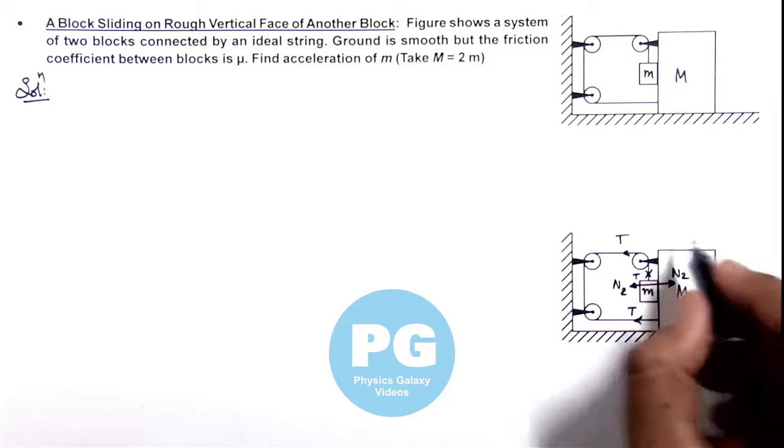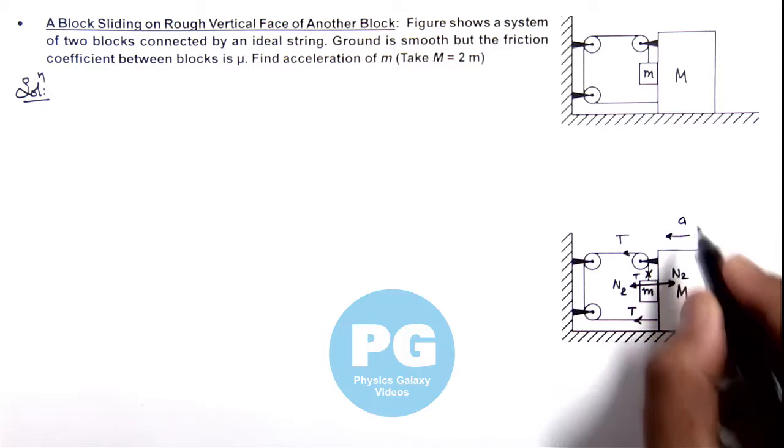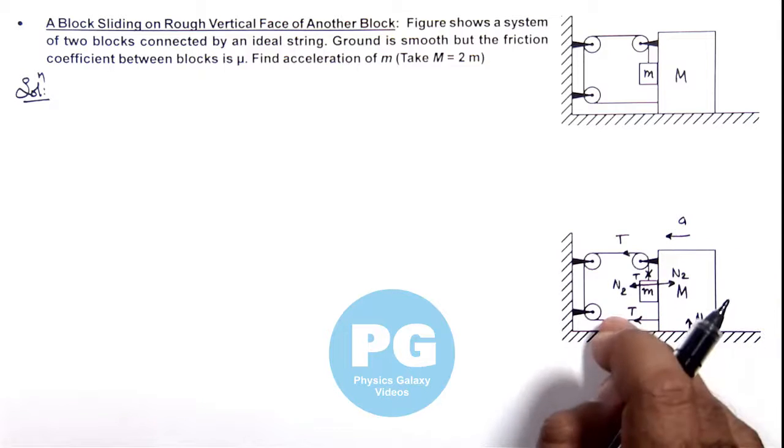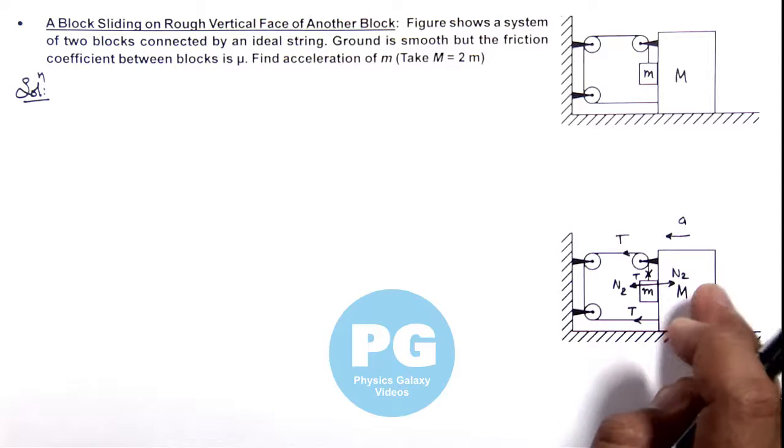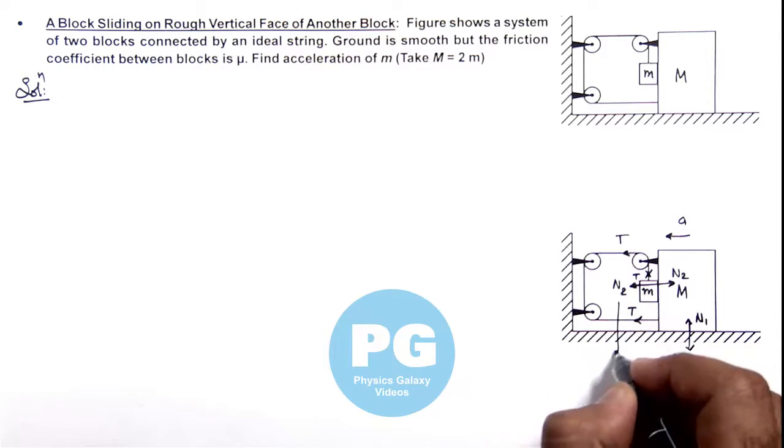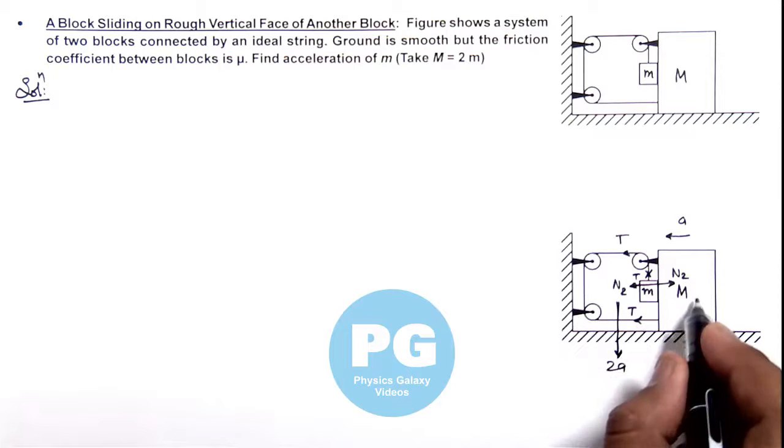If the block of mass capital M moves toward left with acceleration ay, then these two strings will also get shortened by a distance twice the distance capital M moves. So we can say small m will move down with an acceleration 2ay, and along with this acceleration small m is also moving toward left with capital M.